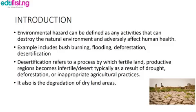Let's proceed to desertification. Desertification refers to a process by which fertile land in productive regions becomes infertile, or referred to as desert, typically as a result of drought, deforestation, and inappropriate agricultural practices. It is also the degradation of dry land areas.